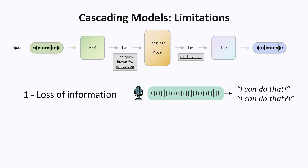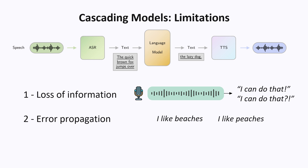The second problem, which is kind of similar to the first, is that errors in one of the earlier models tend to get propagated onto the later models. Imagine you're in a noisy room and someone says 'I like beaches,' or it might have been 'I like peaches,' but you're not really sure because there's some noise. In a cascading setup, the first speech recognition model has to pick one or the other, and if it picks the wrong one, the later model can get really confused. The downstream model doesn't know which words were recognized incorrectly, so it's difficult for it to correct for mistakes made by earlier models.